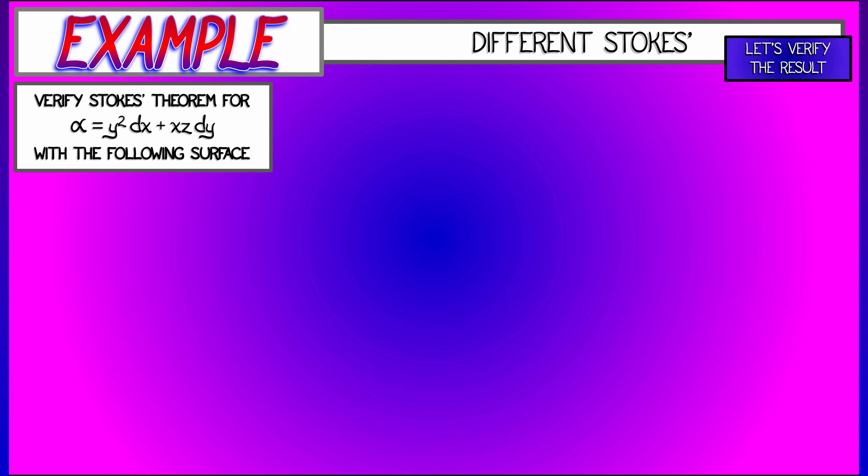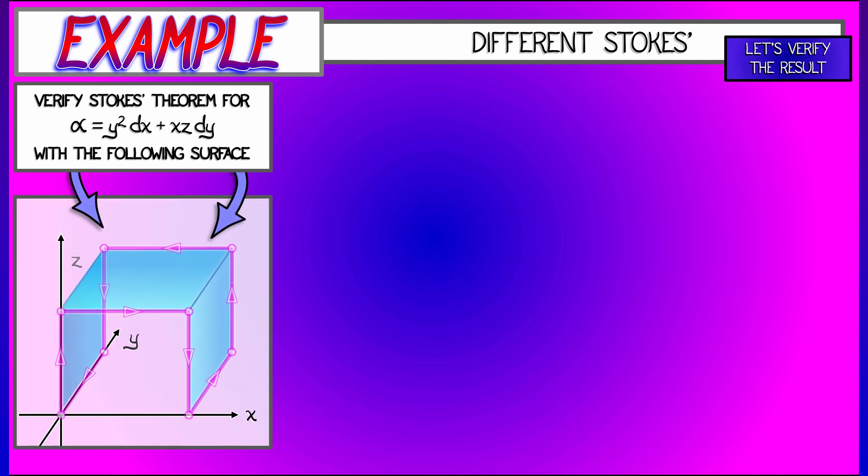Let's compute both sides of it for the following surface. Let's say that D consists of three flat rectangles in the plane that are arranged to form sort of three boundary components of a rectangular box. This is going to intersect the x, y, and z axes at farthest points a, b, and c, respectively.